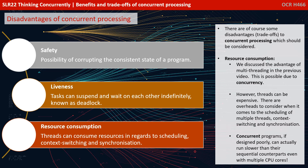We should also consider resource consumption. We discussed the advantage of multithreading in the previous video, and this is possible due to concurrency. However, threads can be expensive. There are overheads to consider when it comes to scheduling of multiple threads, context switching between them, and synchronization of events. Concurrent programs, if designed poorly, can actually run slower than their sequential counterparts, even if we have multiple CPU cores available.